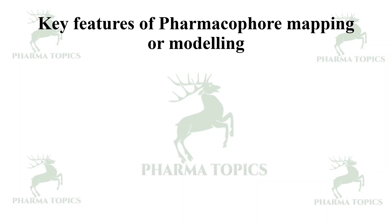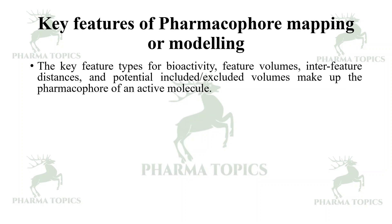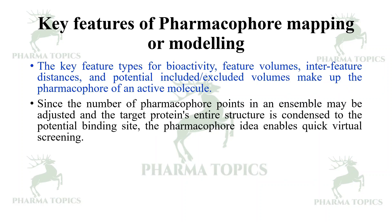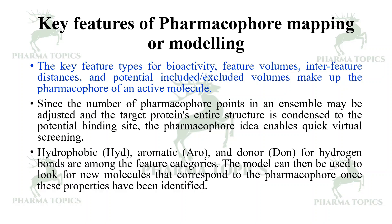The key features of pharmacophore mapping or modeling are: types of bioactivity features, volumes, inter-feature distances, and potential included or excluded volumes that make up the pharmacophore of an active molecule. Since the number of pharmacophore points in an ensemble may be adjusted and the target protein's entire structure is condensed to the potential binding site, the pharmacophore idea enables quick virtual screening. Hydrophobic, aromatic, and hydrogen bond donors are among the feature categories.